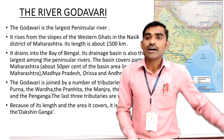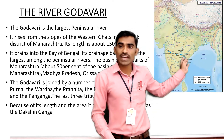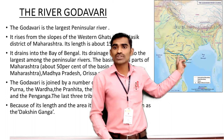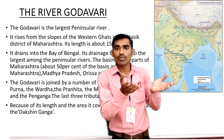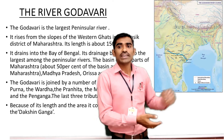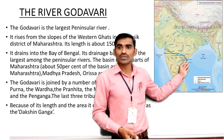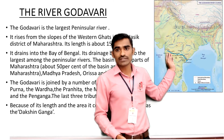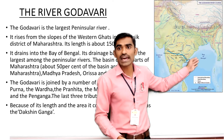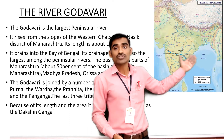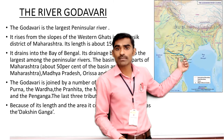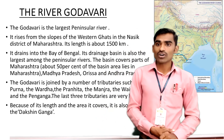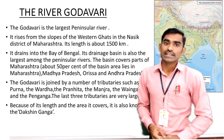It drains into the Bay of Bengal, moving towards the east side, crossing the whole peninsular part. It moves towards the east because the slope of peninsular India is towards the Bay of Bengal. Following the slope, most of the rivers flow towards the east side and meet the Bay of Bengal. So this Godavari River flows for near about 1500 kilometers and meets the Bay of Bengal by making a delta.